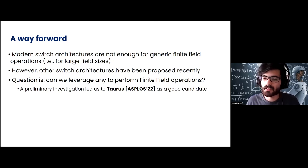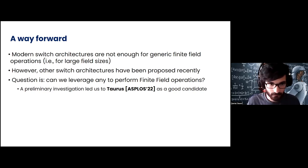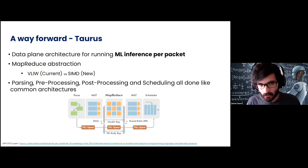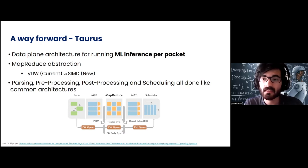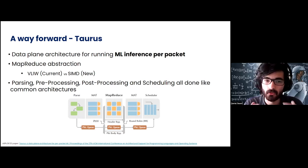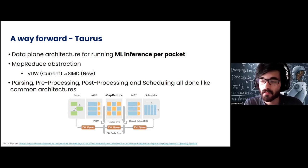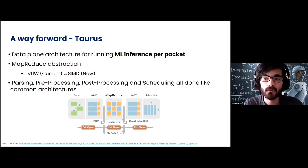A preliminary investigation has led us to an architecture called Taurus that is a good candidate for this. Taurus is defined as a data plane architecture capable of doing machine learning inference and running machine learning modules in the data plane on every packet. The way it is able to do this while maintaining line rate is with a MapReduce operation and the MapReduce abstraction.